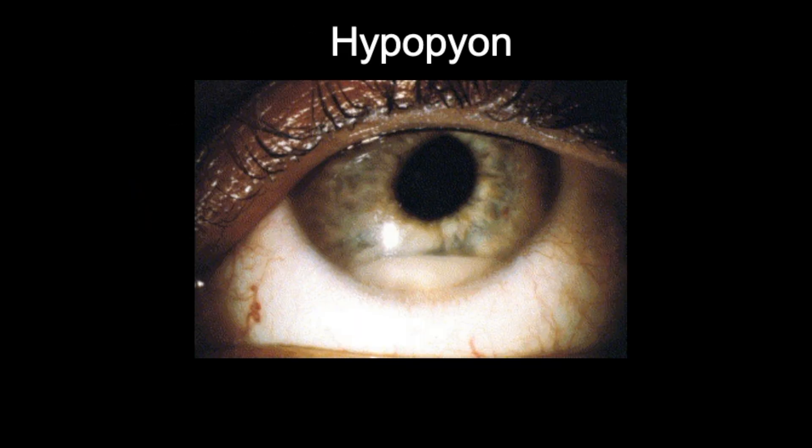Sometimes you may also get something called a hypopyon, demonstrated in this photo here. That's essentially where white blood cells layer in the anterior chamber, and you can usually see this on a slit lamp exam if you can't see it with the naked eye.